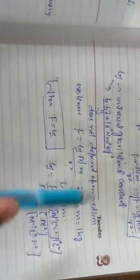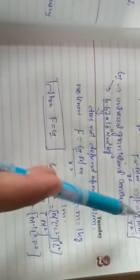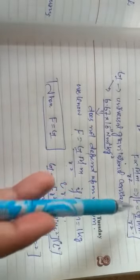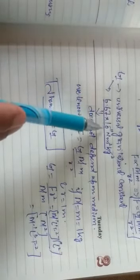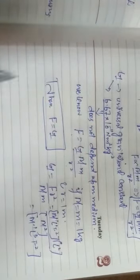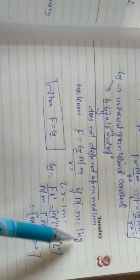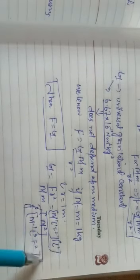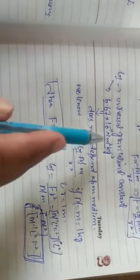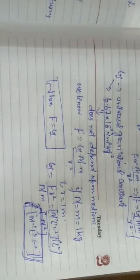So this is the knowledge regarding the universal law of gravitation. It is called universal because it is valid for the universe. The value of G is constant — 6.67 into 10 to the minus 11 Newton meter squared per kg squared. G is defined as the force of attraction between two bodies of unit masses separated by a unit distance. The dimensional formula for G is M⁻¹L³T⁻². This is all for today. Till then, Allah Hafiz.